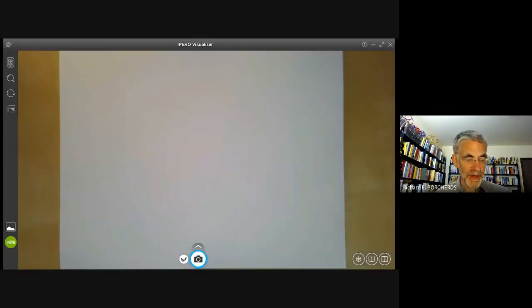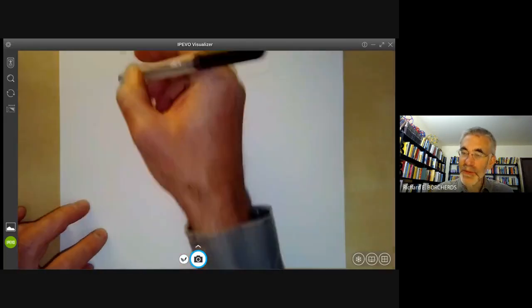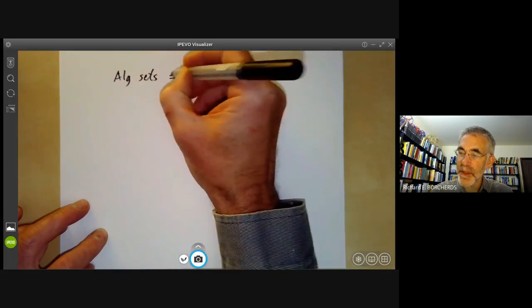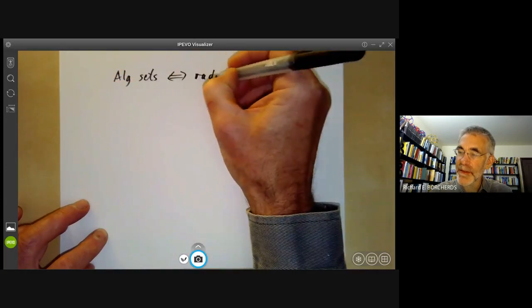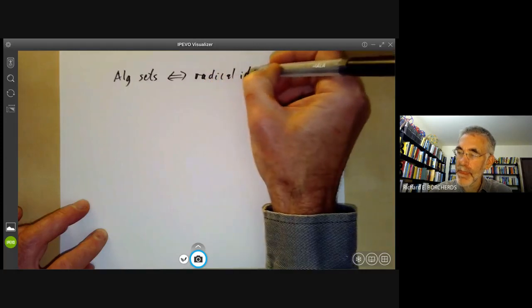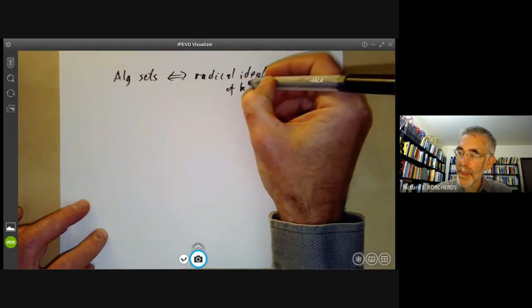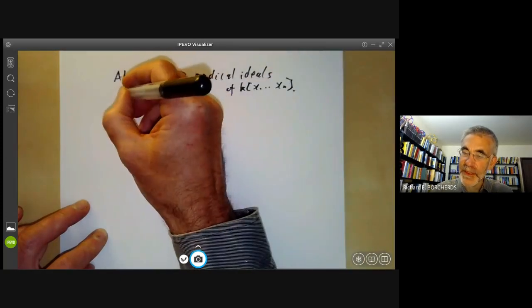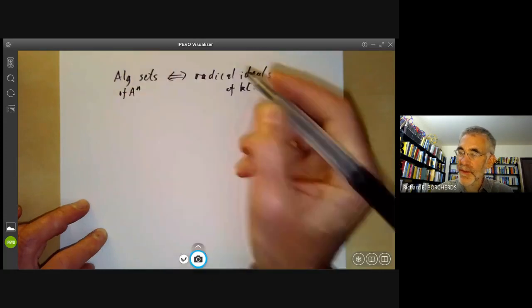Okay, this is algebraic geometry lecture 9, where we will be discussing the Lasker-Noether theorem. So for background, let's just recall that algebraic sets correspond to radical ideals of k[x1,...,xn].